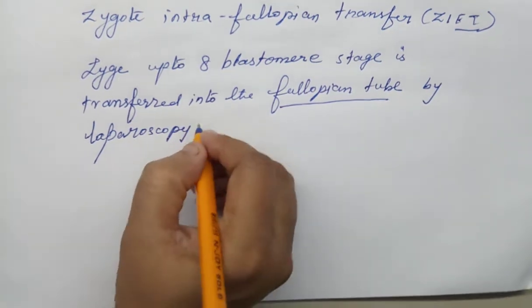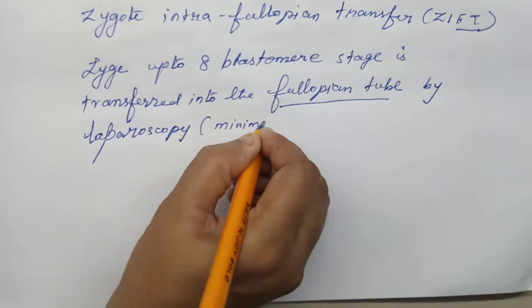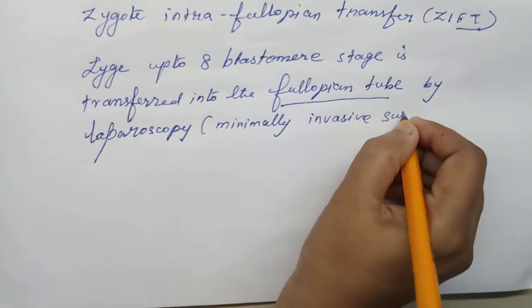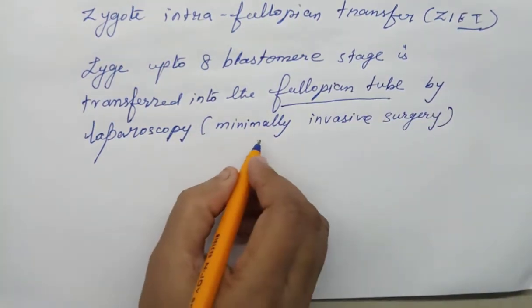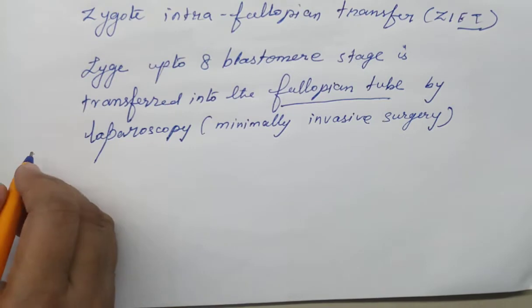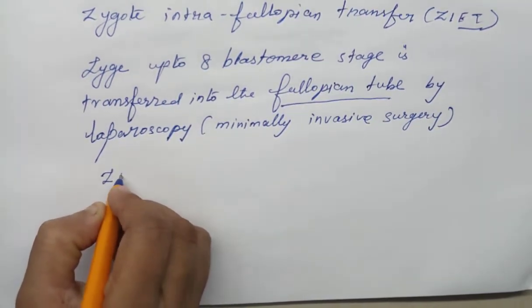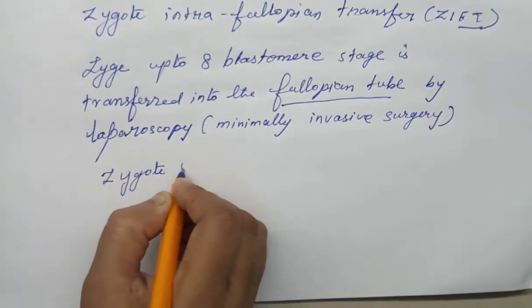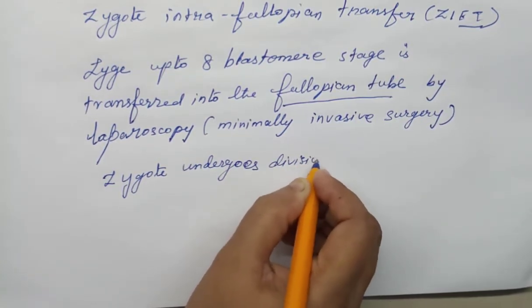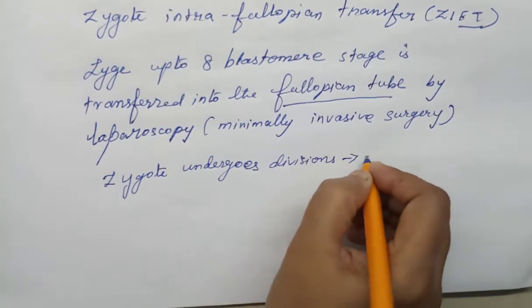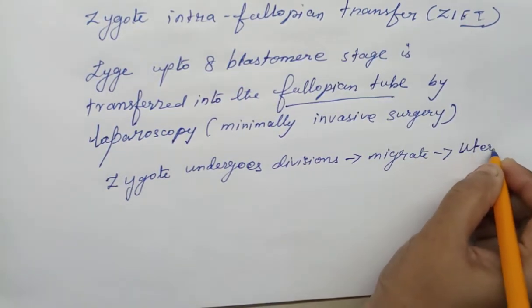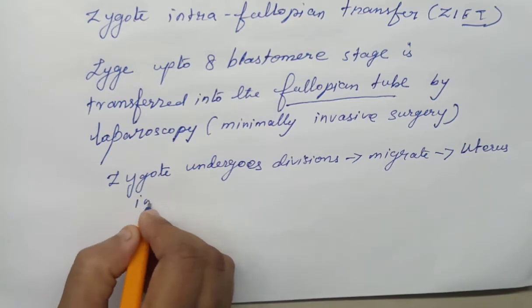This transfer is performed by laparoscopy, which is a minimally invasive surgery where a small opening is made and the surgery is carried out through that opening. After the transfer, the zygote undergoes divisions and migrates to the uterus for implantation.